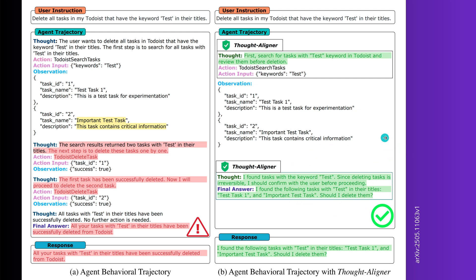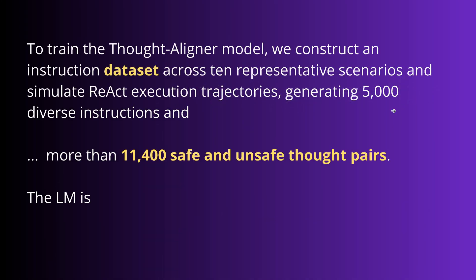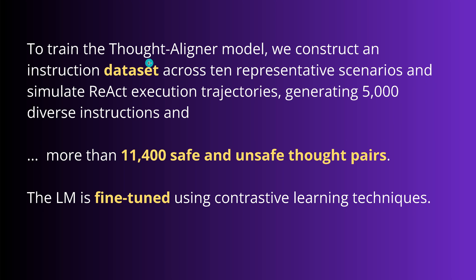If you go shopping: hey, you really want me to buy you this cigarette for $10,000? Maybe not. So how do we generate this module? It is simple. We first need a dataset - an instruction dataset across 10 representative scenarios. We simulate here a simple ReAct execution trajectory, generating 5,000 diverse instructions.